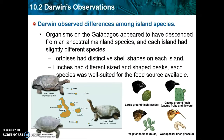Darwin made some really important observations. First, the organisms on the Galápagos Islands — he's famous for studying those. He noticed they seemed similar to each other but had differences from one island to the next. He figured they must have descended from some ancestral mainland species and then diversified once they reached each island. Examples include tortoises with different shaped shells on different islands, and finches with different shaped beaks, each well-suited for whatever food source was available on that island.